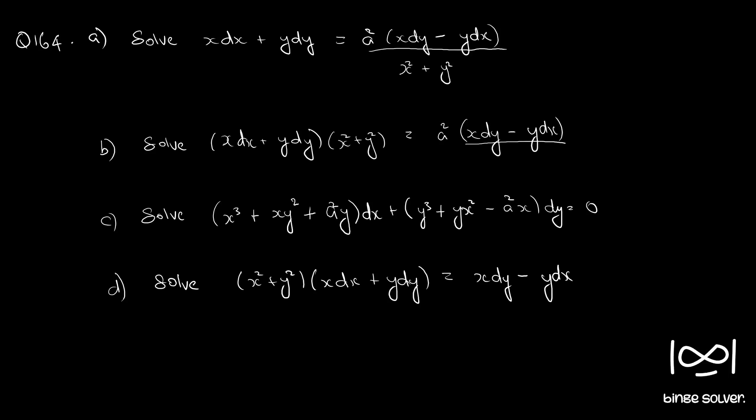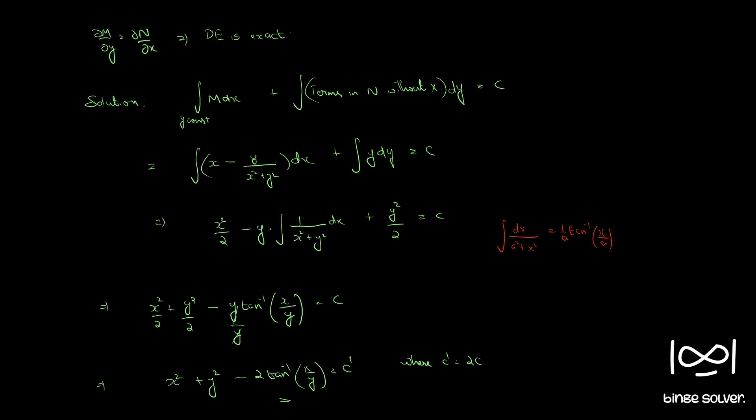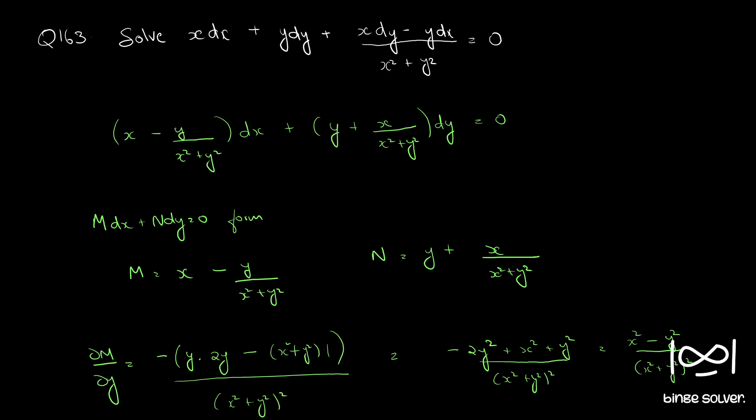Question number 164 has four parts. Looking at the first part, part A: solve x dx plus y dy equal to A squared into x dy minus y dx, divided by x squared plus y squared. If you compare it with the previous question 163, which was x dx plus y dy plus x dy minus y dx by x squared plus y squared, you can see that question 164 is a slight variation of question 163.